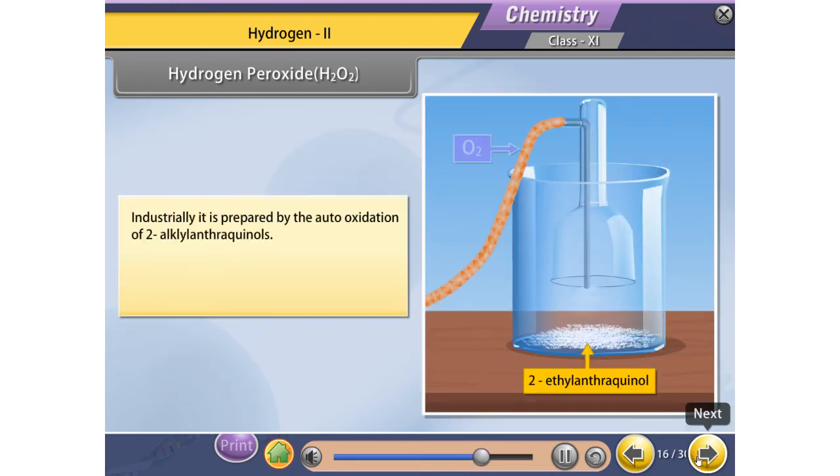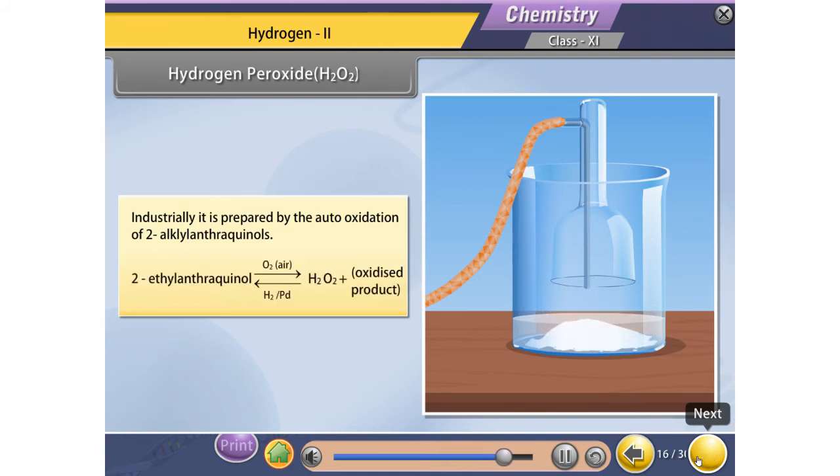Industrially, it is prepared by the auto-oxidation of two alkyl anthraquinols. When two ethyl anthraquinol is oxidized in the presence of hydrogen or palladium, it gives hydrogen peroxide.